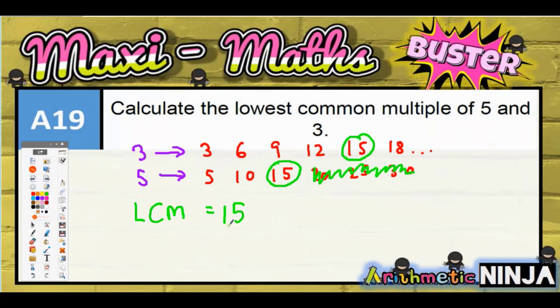Now you might be thinking that all you've got to do is times the two numbers together and that gives you the lowest common multiple, but you've got to be really careful because that doesn't always work. One example where that doesn't work would be 6 and 4.